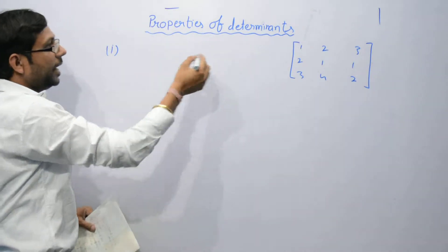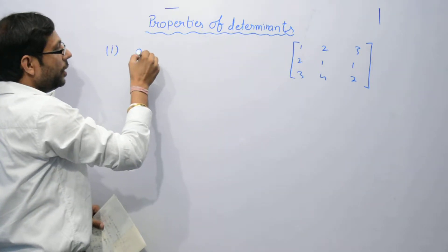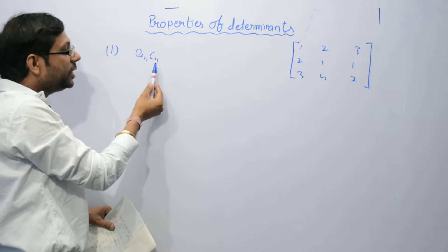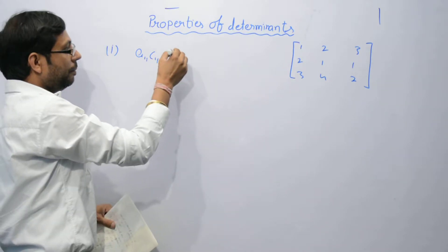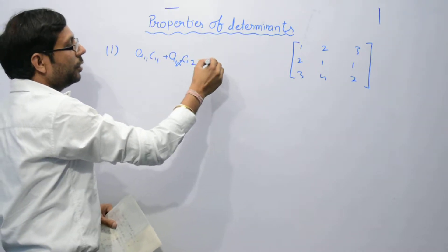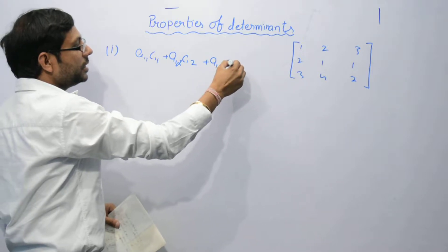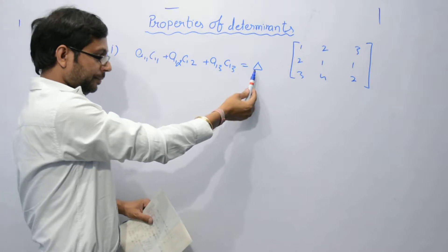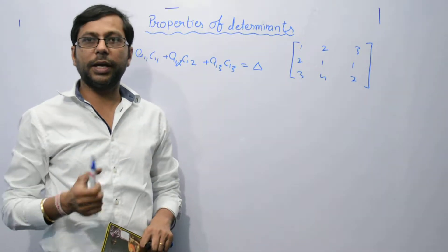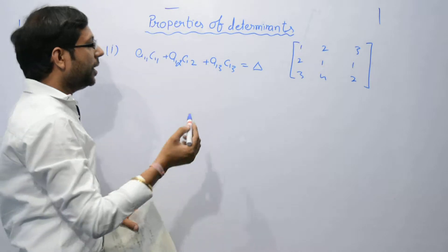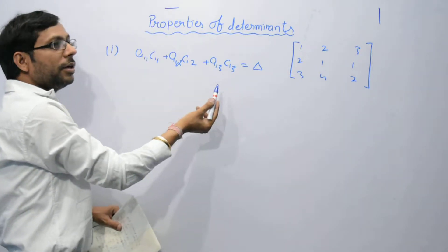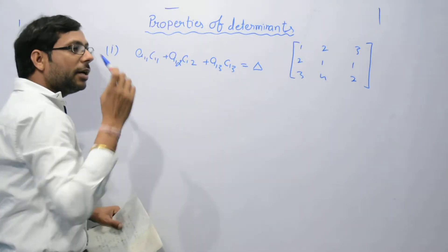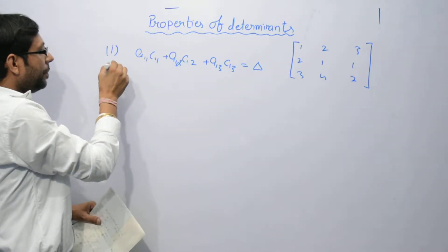The first element is A(1,1) and C(1,1) — that is the symbol of determinant. We have seen here that elements multiplied into their respective co-factors, and the sum of them is the determinant. That is the first property.